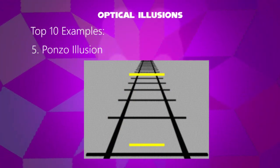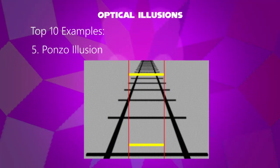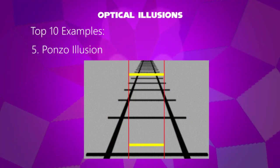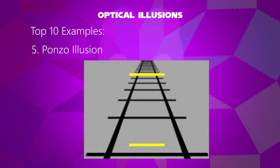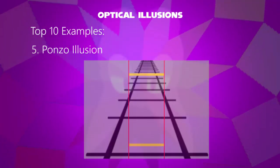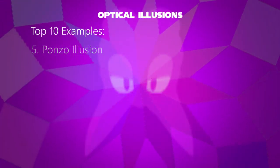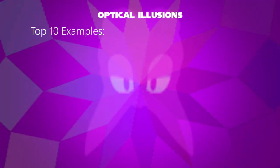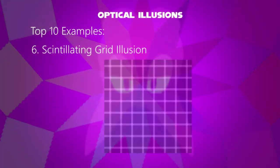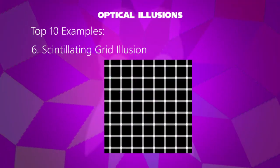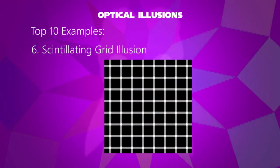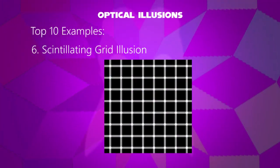Fifth example: the Ponzo illusion. By drawing two identical lines across a pair of converging lines, similar to railway tracks, one line appears far and the other near, but they look identical in size.